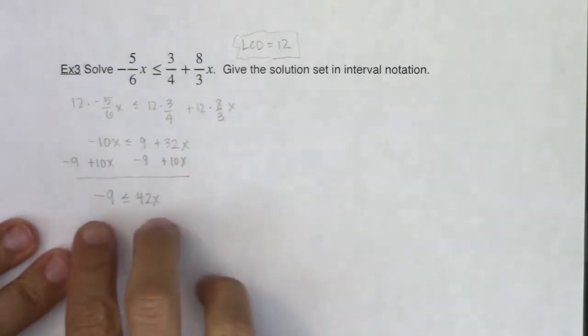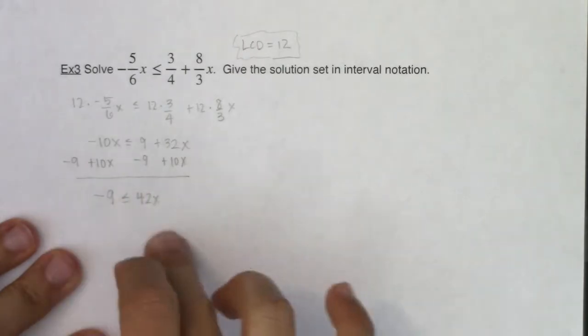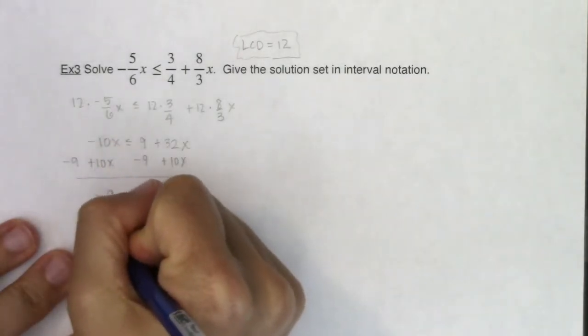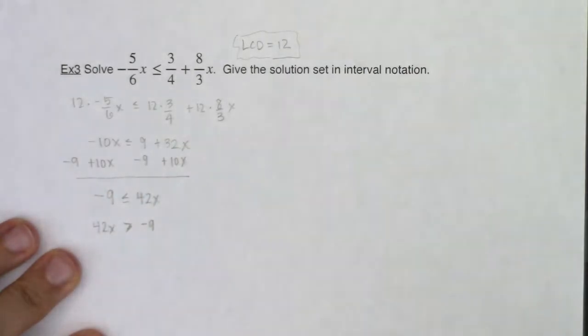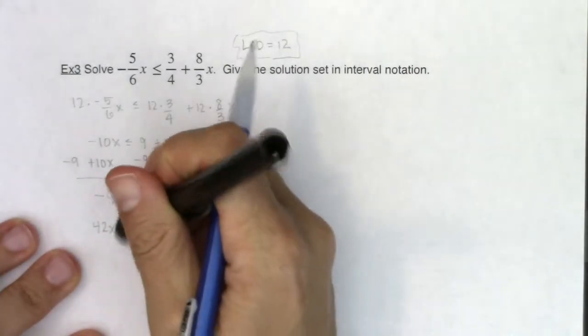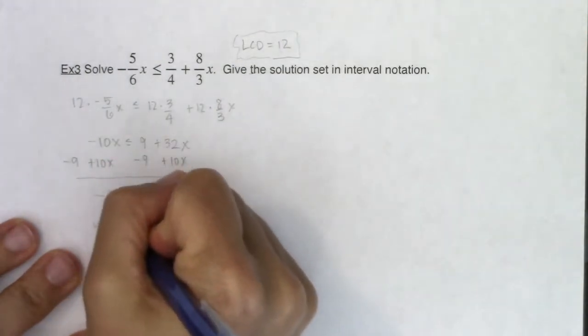Okay, and again, I like to have my variables on the left side. So I want to move the 42x over here and the negative 9 over here. And when you switch the sides, or switch the terms on the sides, you also need to change the direction of the inequality.